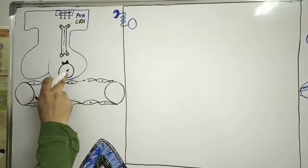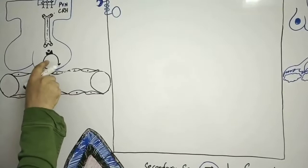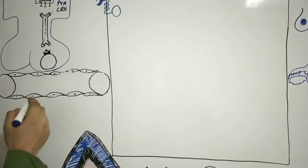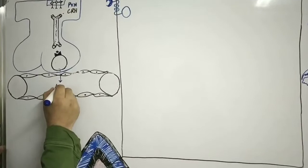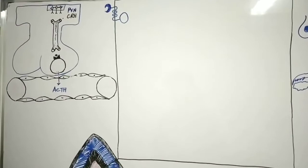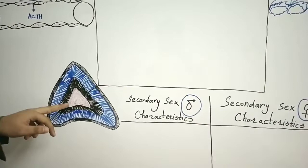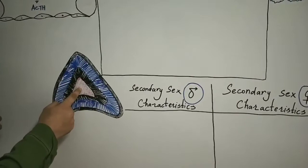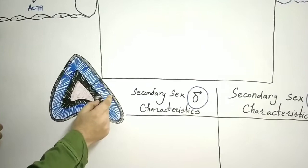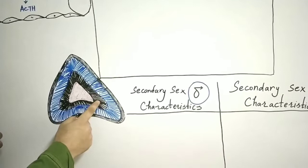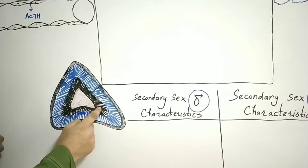CRH binds to the corticotrope and stimulates it. When the corticotrope gets activated, it secretes a hormone known as ACTH — adrenocorticotropic hormone. This ACTH travels to the adrenal cortex. The adrenal gland has two parts: the adrenal medulla (internal part) and the adrenal cortex (outer part). The adrenal cortex has three zones: zona glomerulosa, zona fasciculata, and zona reticularis. The zona reticularis is responsible for synthesizing sex corticoids.